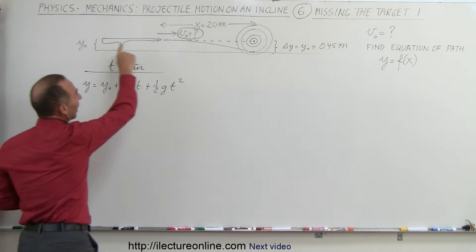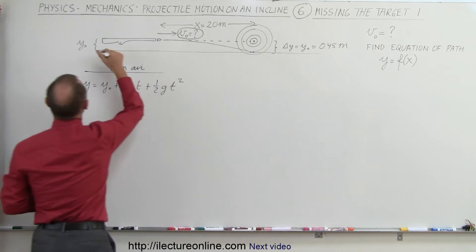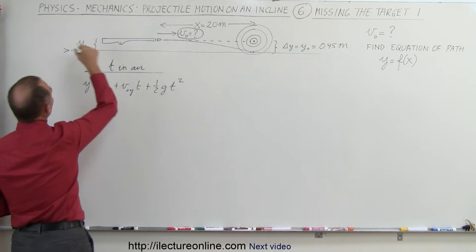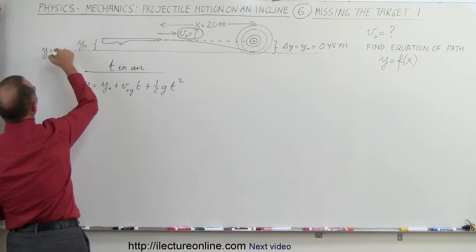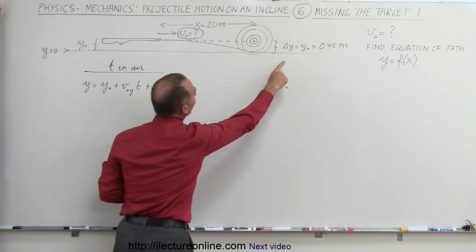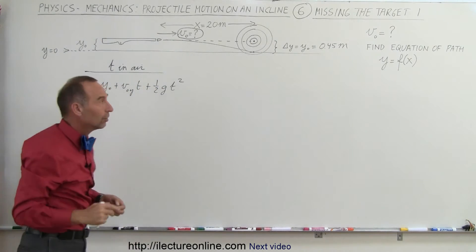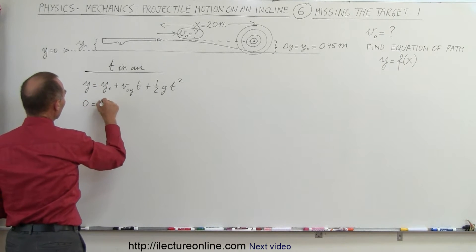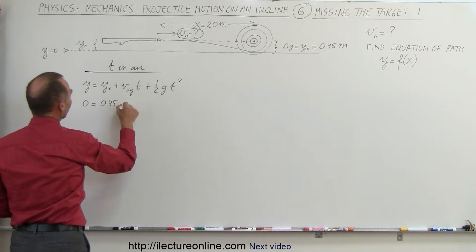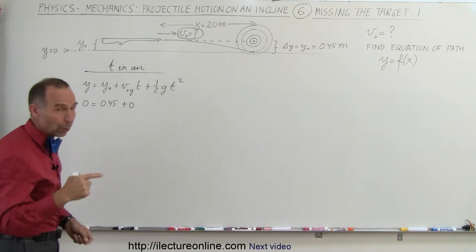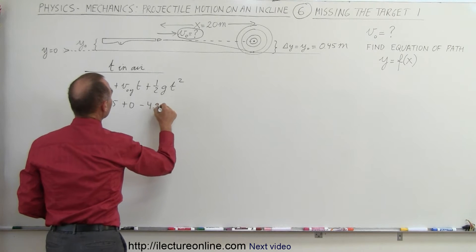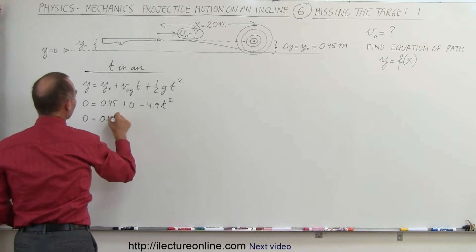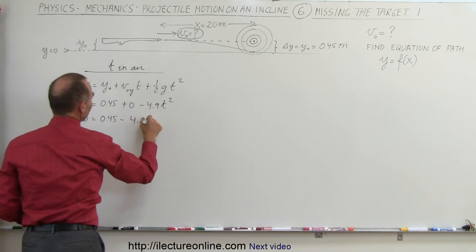Plug it in what we know. The final height will be 0 when we hit, well, what we're going to do here is call this location where the bullet hits the target. Let's call that y equals 0. And then the initial height, y sub naught, will be 0.45 meters above y. So this becomes 0 equals 0.45 plus 0, because there's no component in the y direction, and then minus 4.9 t squared. So this becomes 0 equals 0.45 minus 4.9 t squared.